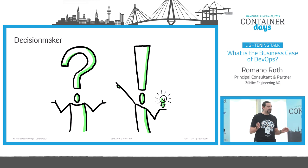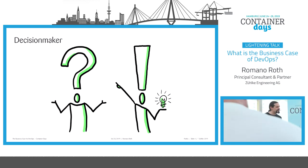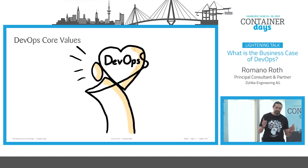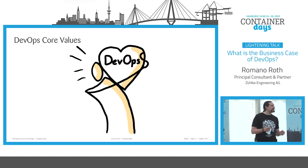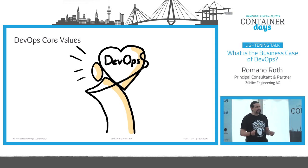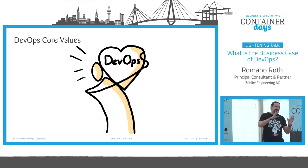Today's decision makers want to do DevOps, and all of you want to do DevOps as well. But unfortunately, the decision makers don't know what DevOps is. So you will go to them and talk about the DevOps core values. You will talk about accountability, trust, empowerment, continuous improvement, and how to put the customer in the center.